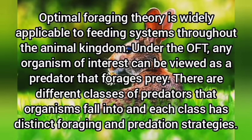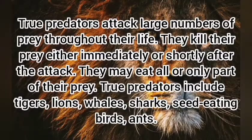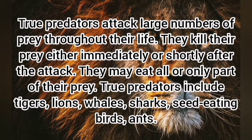There are different classes of predators that organisms fall into, each with distinct foraging and predation strategies. True predators attack large numbers of prey throughout their life, kill their prey either immediately or shortly after the attack, and may eat all or only part of their prey. True predators include tigers, lions, whales, sharks, seed-eating birds, and ants.